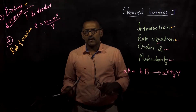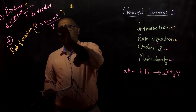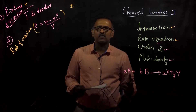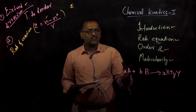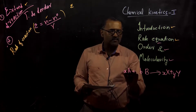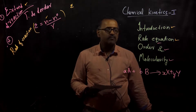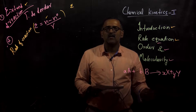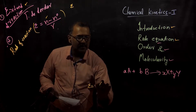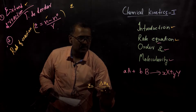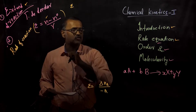The extent of reaction can be given by a very simple equation: epsilon is equal to (n minus n0) divided by nu. Here, n0 is the initial amount of moles, n is the final amount of moles, and nu is the stoichiometric constant. For a general reaction written as A moles of A plus B moles of B giving X moles of X and Y moles of Y, the extent of reaction can be given as epsilon is equal to delta NA divided by A, where delta NA is N minus N0 and A is the stoichiometric coefficient.